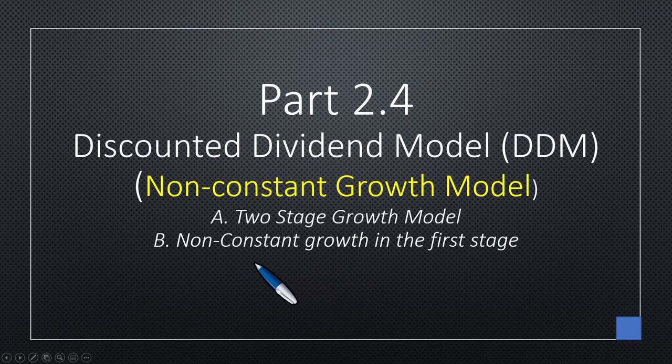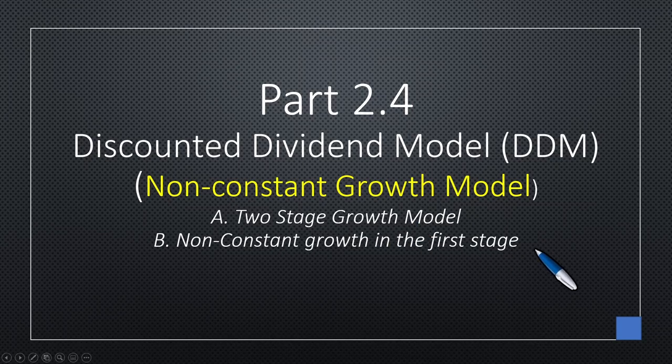Maybe it will grow 10% this year. Next year, it will grow 5%, then 12%, then later it will be constant. So how do we solve that?